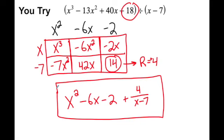This leaves my answer as x squared minus 6x minus 2 plus 4 over x minus 7. Please make sure you understand what I did here, as we will soon be moving on to the final question.